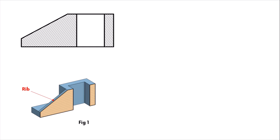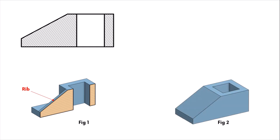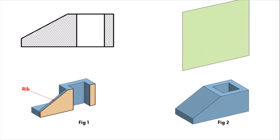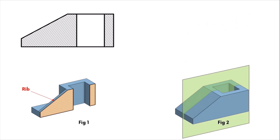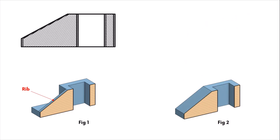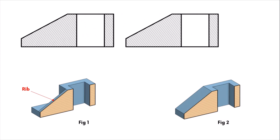Now let's take a look at a second part shown in figure two. This part does not contain a rib; instead, the entire part has a uniform thickness. We make a sectional front view of this part using the standard sectioning steps.